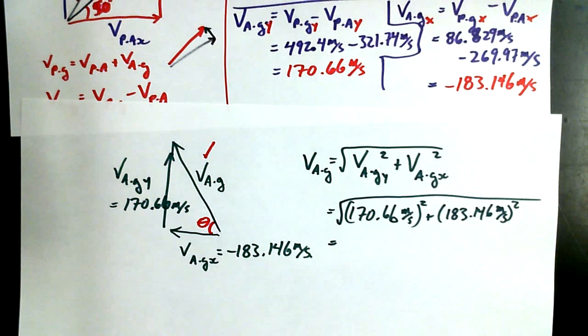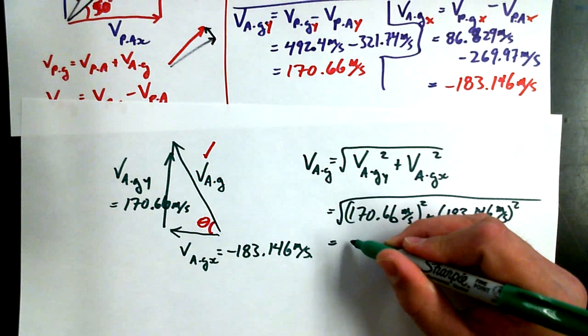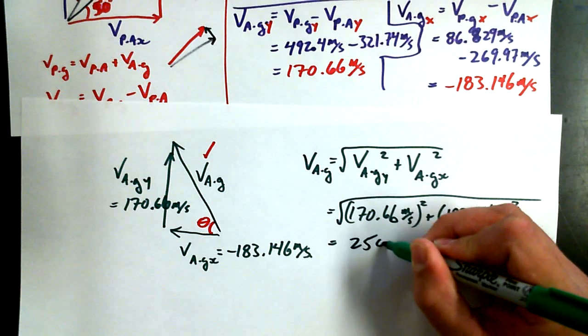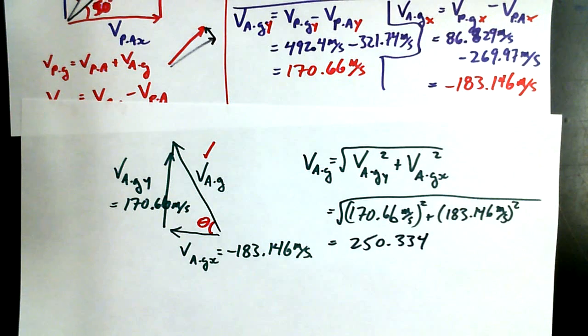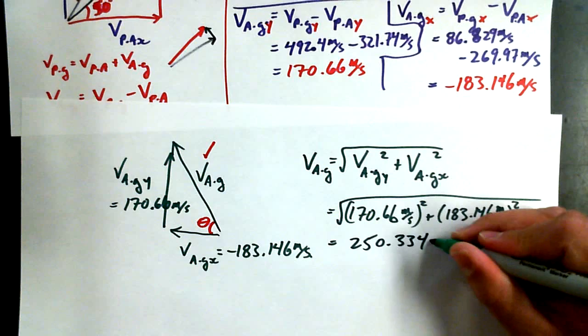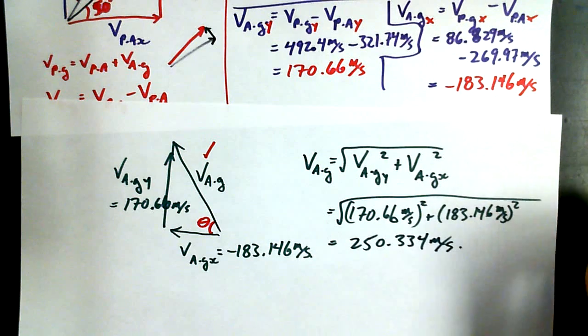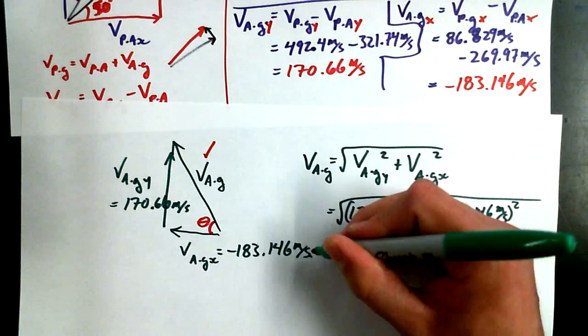So we're going to go back to our good old friend, Mr. Pythagorean. And VAG equals the square root of VAGY squared plus VAGX squared. And we'll do that calculation to find the magnitude. So that's going to be our 170.66 meters per second all squared plus... And you can leave this again as a negative 183.146, or you can recognize that it doesn't make any difference. I'm going to recognize that it doesn't make any difference, because we're squaring a negative value, and it's just a geometric shape. Okay, 183.146 meters per second squared. Again, all square rooted. What do we get for VAG? You got it. 250.334.